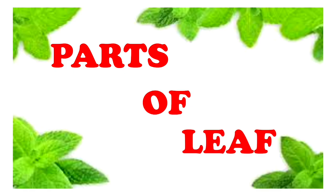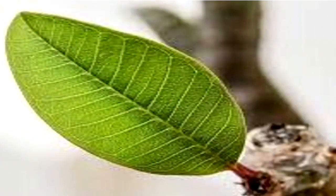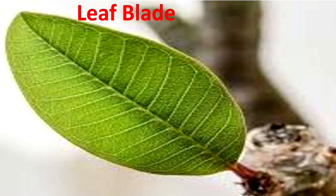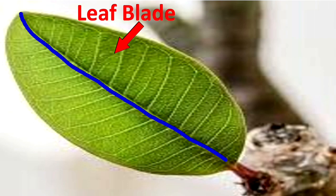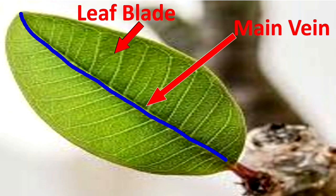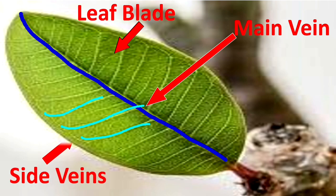Now let us have a look at the different parts of the leaf. See in this picture — this is the leaf. The first part is the leaf blade; it is the flat and green part of the leaf. You can see the main vein running through the middle of the leaf, also known as the midrib. There are some side veins coming out from the main vein. The next part of a leaf is the petiole, or leaf stalk, which connects the leaf to the stem.